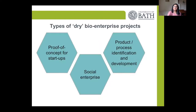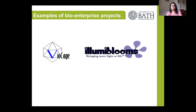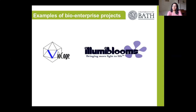The types of bio enterprise projects could include proof of concept startups, product processing or identification and development, or social enterprise — something for the greater good of society or community. Some examples: Bio Cage, which was medically relevant and related to the influenza virus, where a student came up with the idea of how to contain it within a silica base. Another more interesting and wackier idea was Illumi Blooms, where students said: why not put green fluorescent proteins within flowers, so you'd have flowers that light up at night?